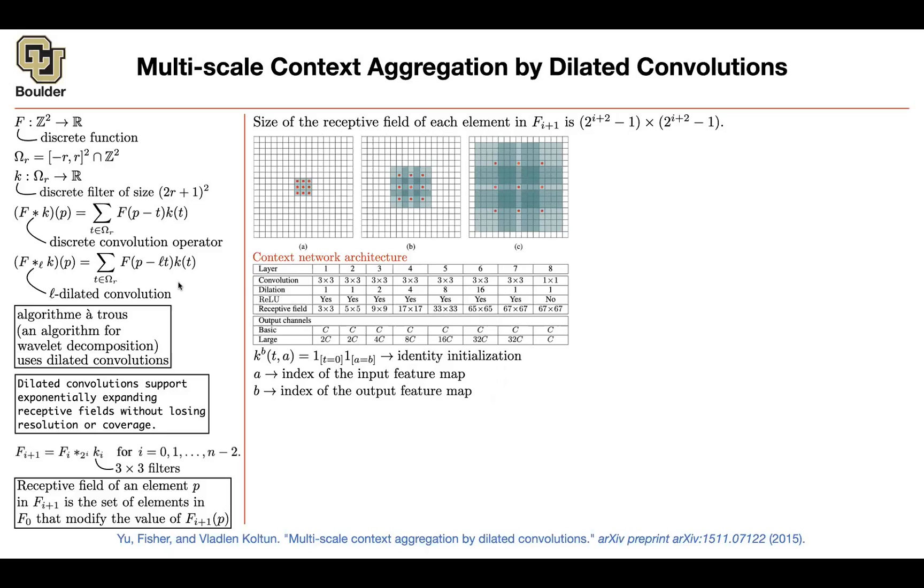I have a question. So the goal with this dilated convolutions is to increase the receptive field. Like in this figure C, because we see that the receptive field is almost the entire original image. That's a good thing. Is that correct? Yes. So it's going to give you more of the global context of the image. Okay.